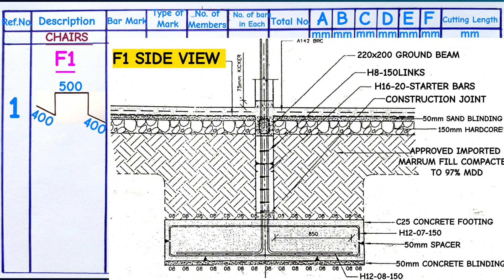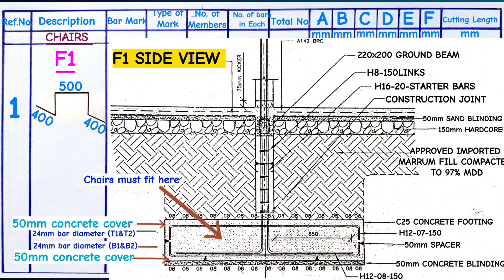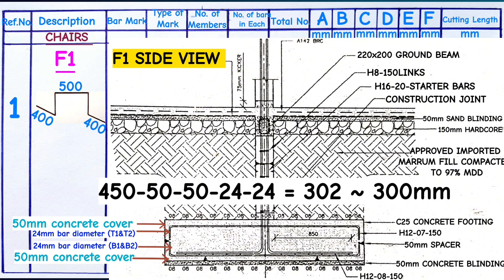For footing F1, the drawing clearly details that the thickness of the base is exactly 450 millimeters, including both concrete covers — the one at the top and the one at the bottom. We get 450 millimeters minus 50 millimeters concrete cover on top, minus 50 millimeters concrete cover at the bottom, minus 24 millimeters for bottom bars one and two (each 12mm), minus 24 millimeters for top bars one and two, leaving us with 302 millimeters. We take the slightly lower figure of 300 millimeters.